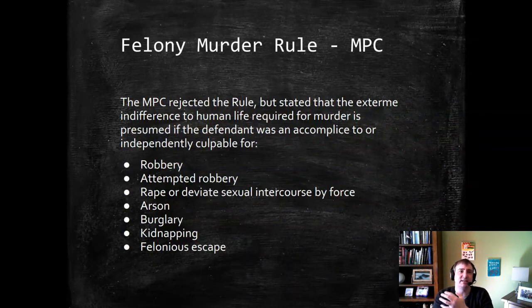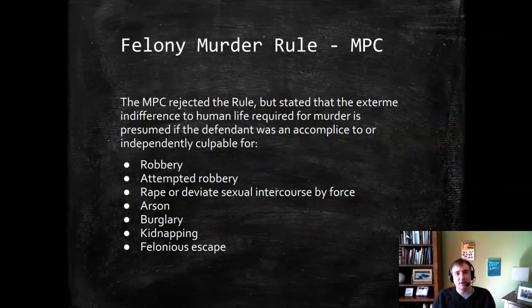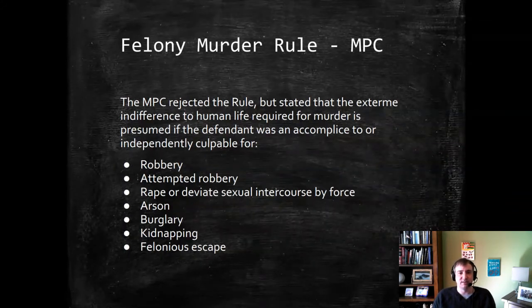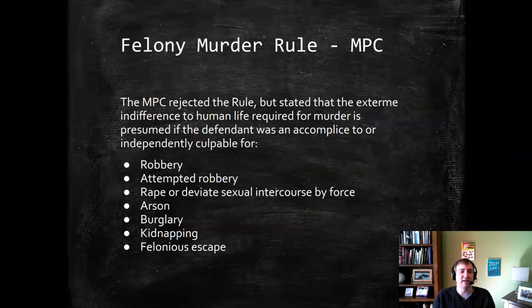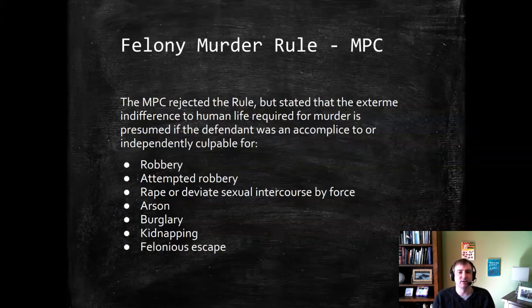What does that mean? It means there's a burden shift. Instead of the government having to prove beyond a reasonable doubt that the defendant was manifesting extreme indifference to human life, it's now up to the defendant to prove by a preponderance of evidence that they were not. That will be fact-specific. For example, if someone commits arson in a building that's completely walled off with no sign of a human being, and then burns it, and at the last minute somebody runs in and dies — we might say they're not exercising extreme indifference, even though the presumption applies. This is how the MPC, while rejecting the felony murder rule, at least incorporated some of the idea behind it.